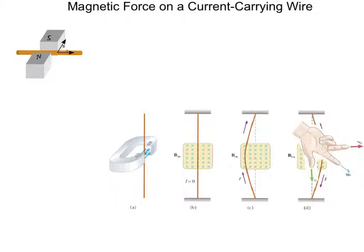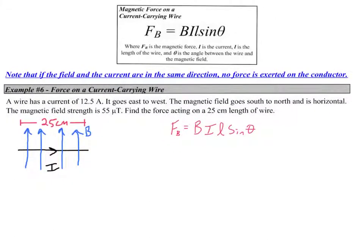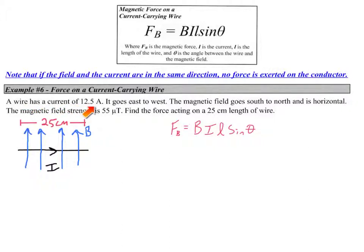But just knowing the direction of a force isn't enough for us — we're physics students. We want to be able to figure out the magnitude of force, so we have an expression for it. This here is BIL. BIL gives us the magnetic force on a current-carrying wire, where that magnetic force is equal to the magnetic field times the current times the length of the wire times the sine of the angle between the wire and the magnetic field. This tells us that if the field and the current are in the same direction, the angle would be zero and no force is exerted on the conductor.